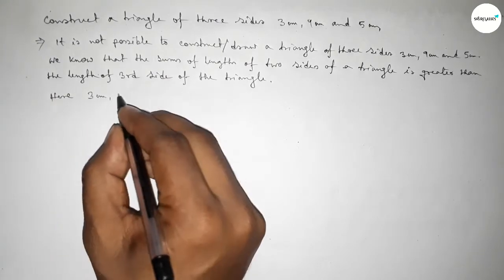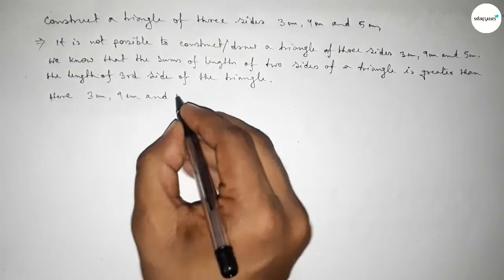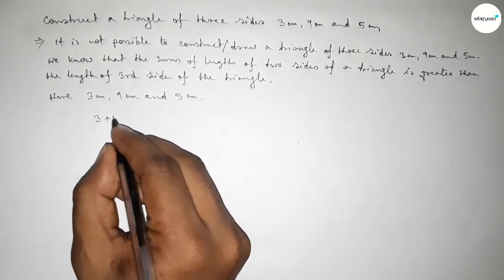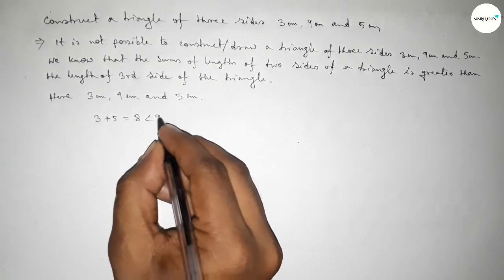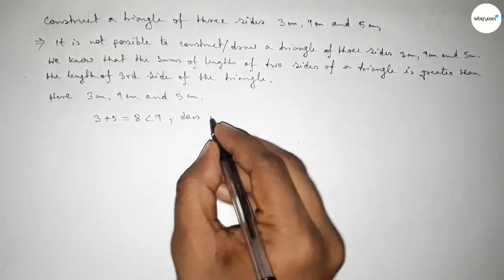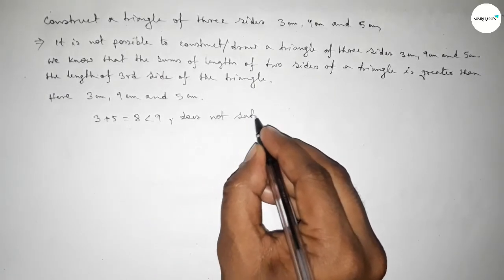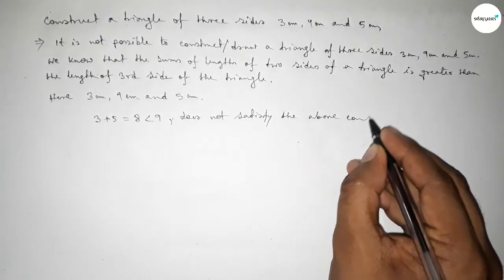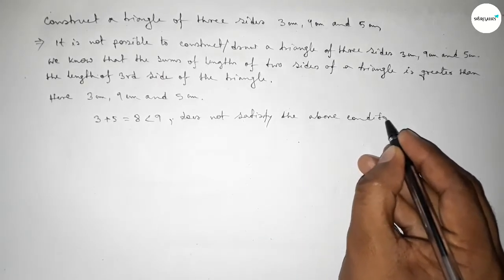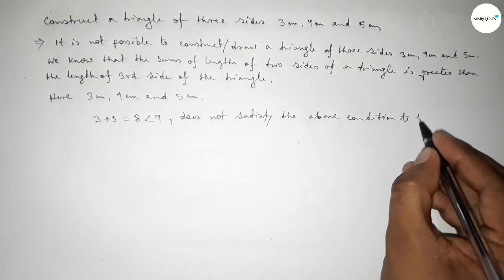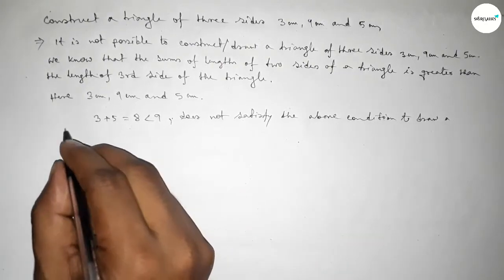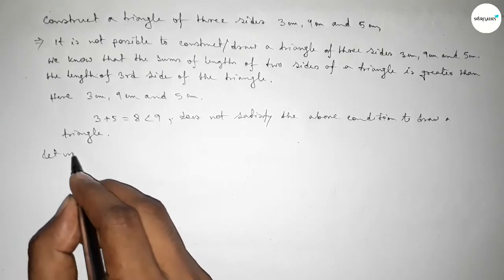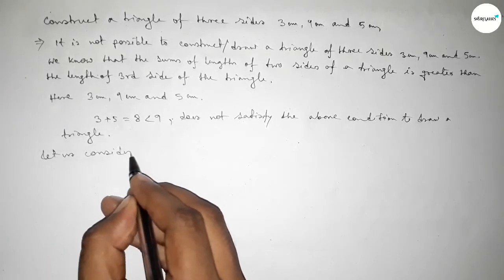The given three sides are 3 centimeter, 9 centimeter, and 5 centimeter. Adding 3 and 5: 3 plus 5 equals 8, which is less than 9 centimeter. So it does not satisfy the above condition to construct or draw a triangle using these three sides.